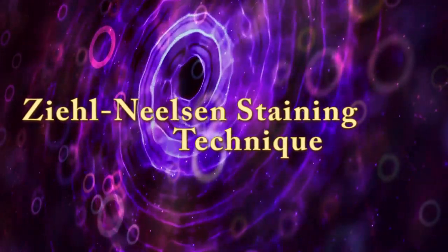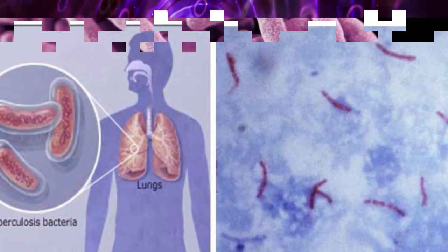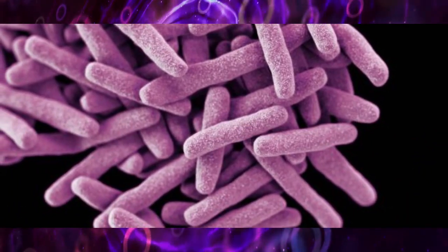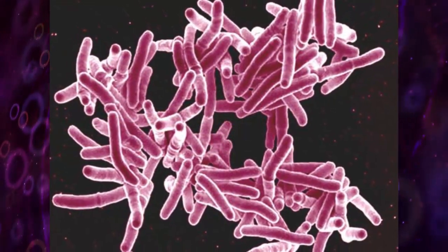Zeal-Nielsen method of acid-fast staining technique is used to stain Mycobacterium species, including Mycobacterium tuberculosis, Mycobacterium ulcerans, and Mycobacterium leprae.